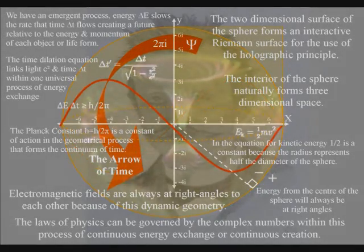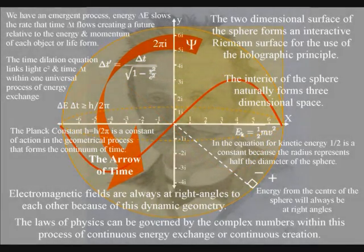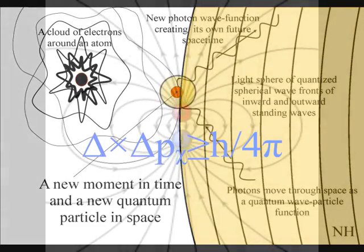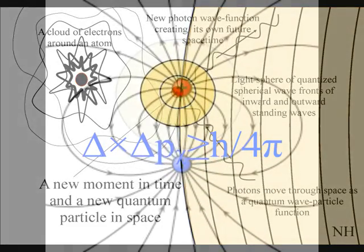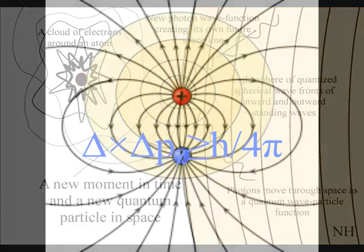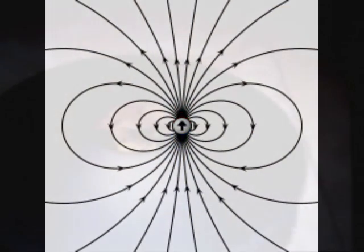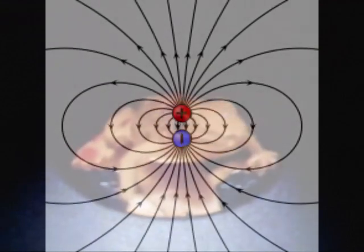Therefore, in a way we have a five-dimensional process with the exchange of photon energy forming the movement of positive and negative charge with the continuous flow of electromagnetic fields. In this theory we have the holographic principle in play, formed by the dynamic two-dimensional movement of positive and negative charge.